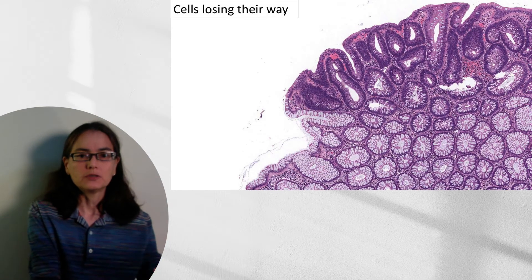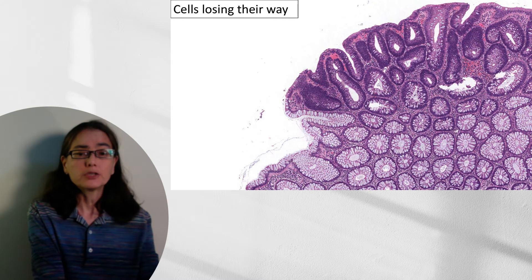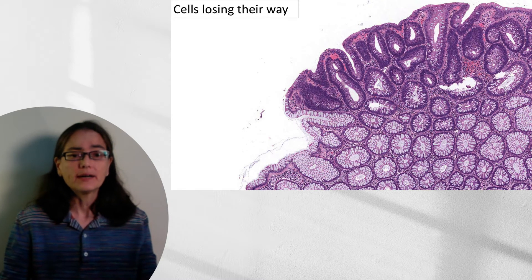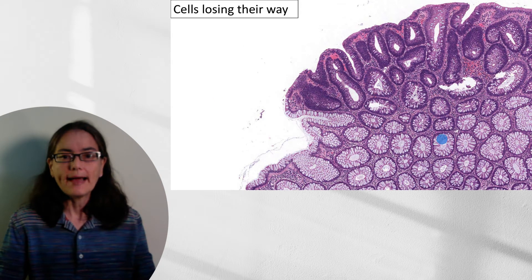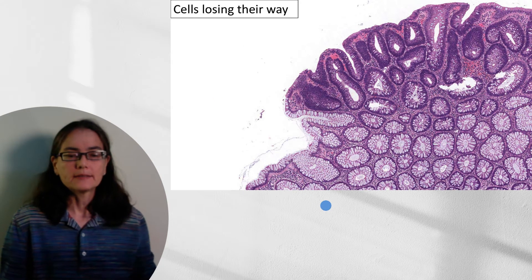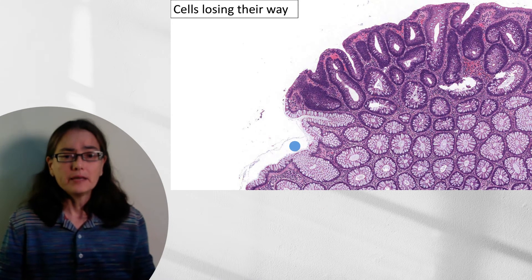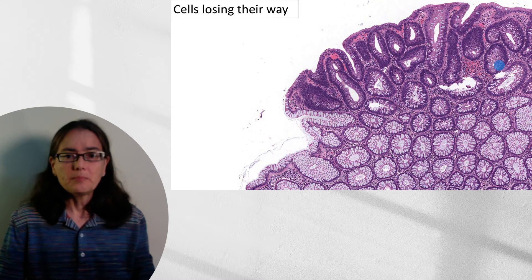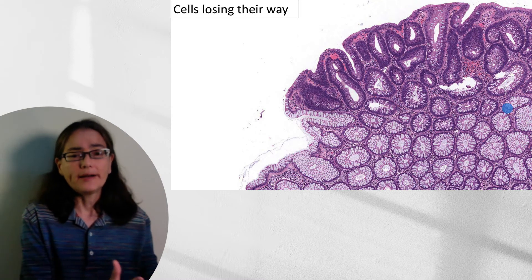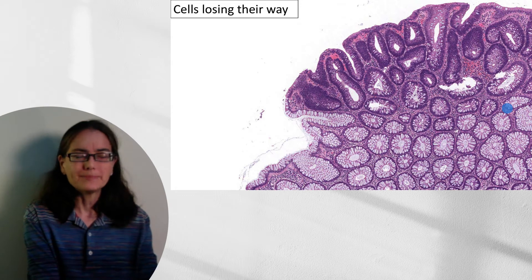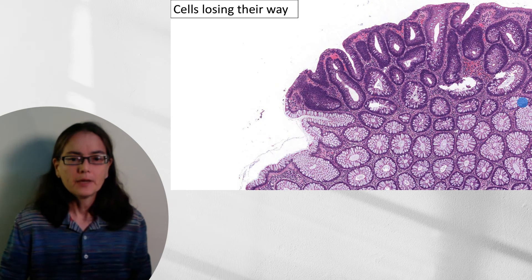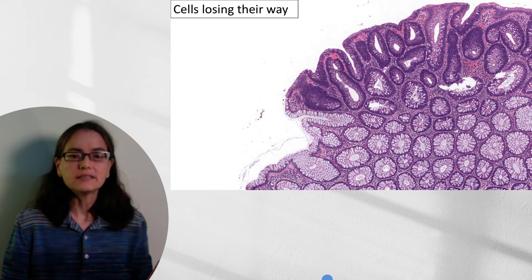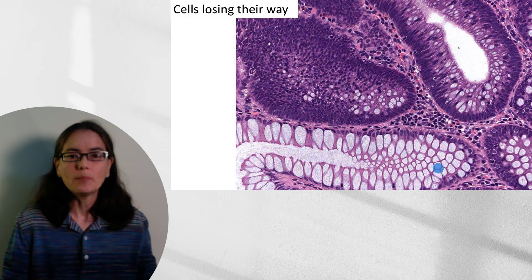Let's look at cells losing their way. This is a beautiful image of a tubular adenoma. It very nicely shows normal, happy mucosa here. This is very happy colonic mucosa — it wakes up in the morning and says, I'm going to make mucin. These dysplastic cells, on the other hand, don't wake up thinking that. They're still making a little mucin, but not so much.